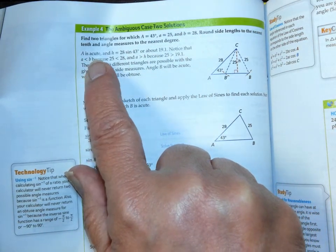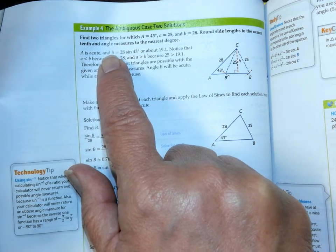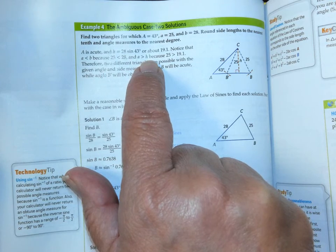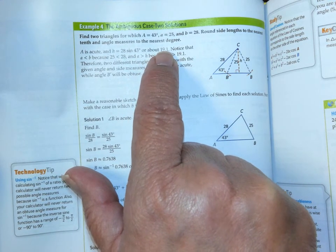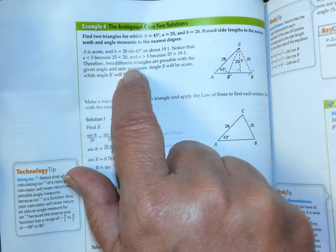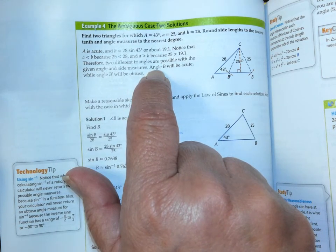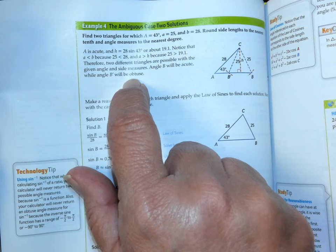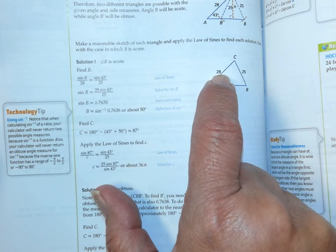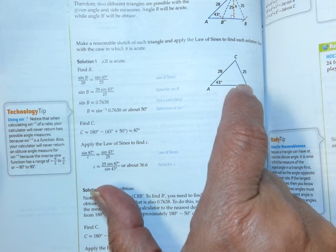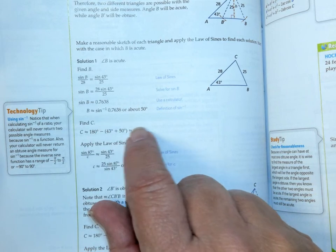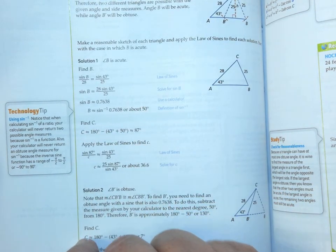So we start working. We know A is acute. So if A is acute, we know we have to find H. H comes out to be 19.1. So A is less than B, but A is bigger than H. 25 is bigger than 19.1. So in that scenario, there's two different angles that are possible. One where angle B comes out acute, and one where angle B comes out obtuse. So what you have to do is you have to make a sketch of each one. So we know angle A is 43 degrees. We know this side is 28. And we're going to draw angle B as acute and mark that 25. And then we're going to do our law of sines. We're going to do our triangle inequality theorem. And we've solved everything.